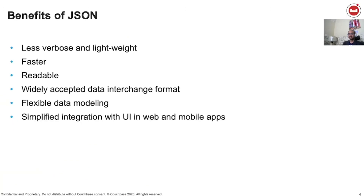Over the past few decades, JSON has been the de facto standard of the web. JSON is known for being lightweight, faster, and more than anything, easy to read and is widely accepted as a data interchange format. JSON also natively works with JavaScript, which almost every developer is familiar with today. Its flexible data modeling makes it more seamless in integrating with web and mobile applications. We here at Couchbase love JSON and we have built quite a few features that are JSON-centric, like the N1QL service, analytics, and more.